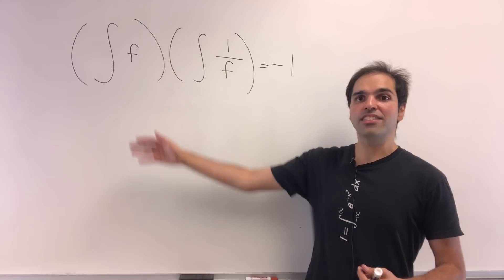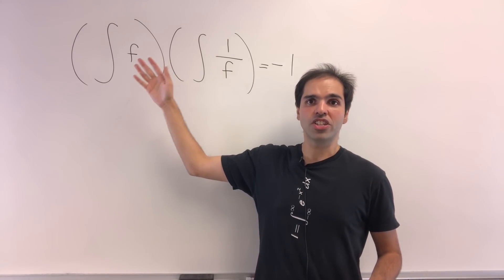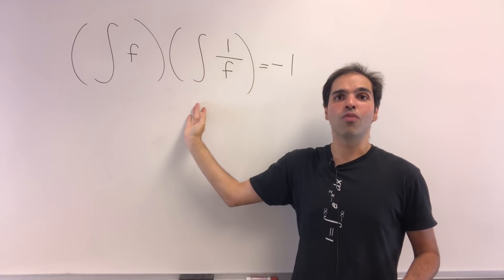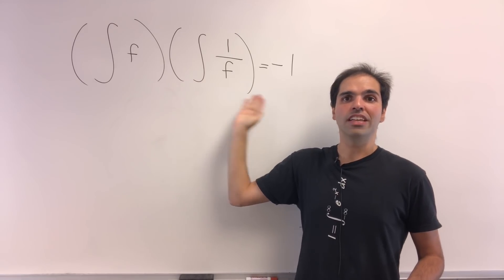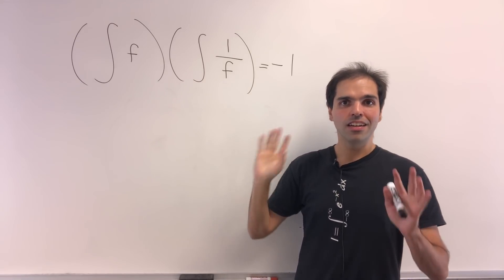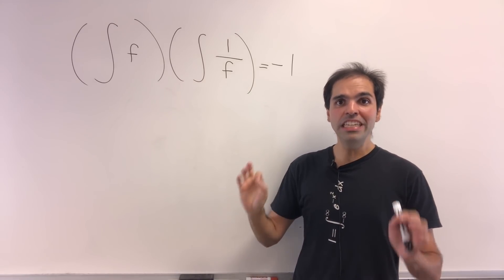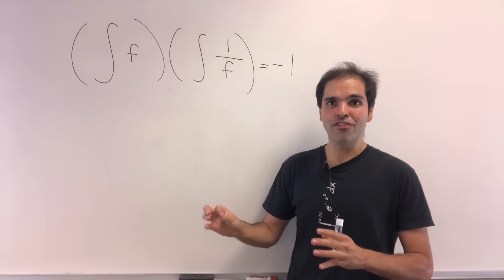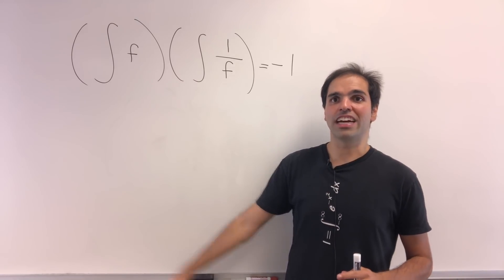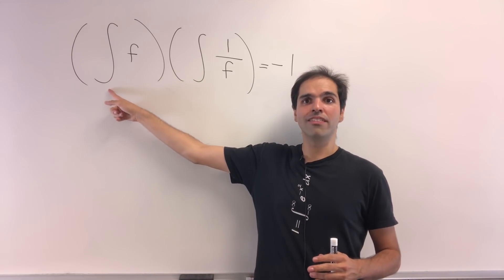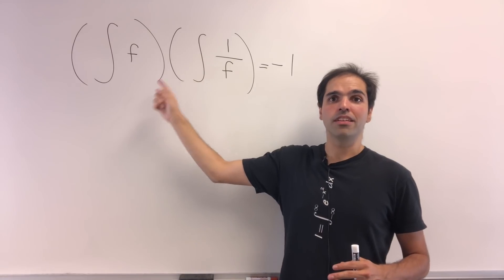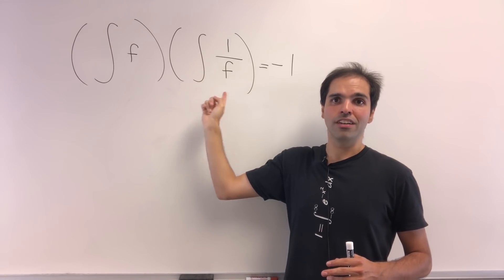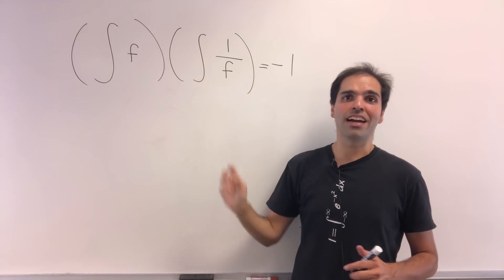Namely, let's try to find a function such that the integral of f times the integral of 1 over f equals minus 1. What I mean here is, let's try to find a function f such that there is one antiderivative of f times another antiderivative of 1 over f, which gives you minus 1.